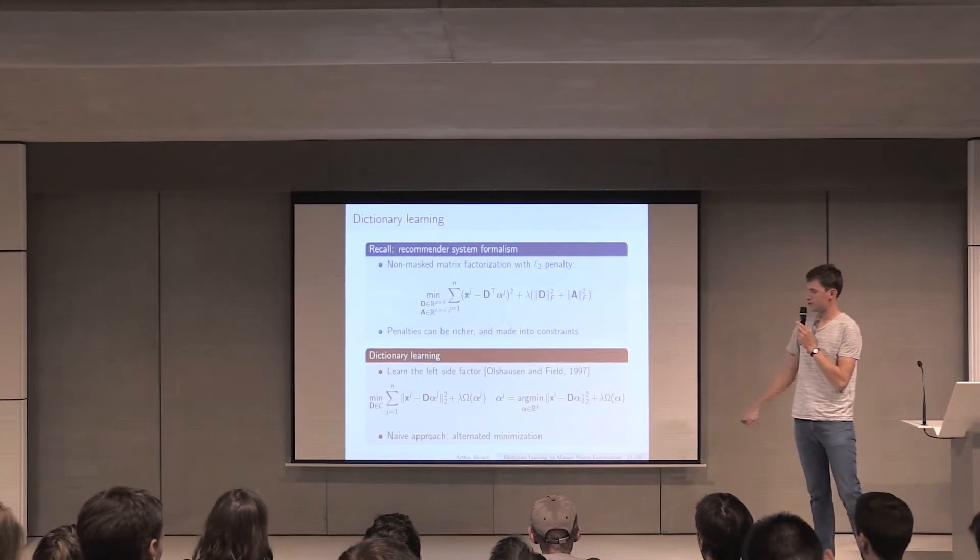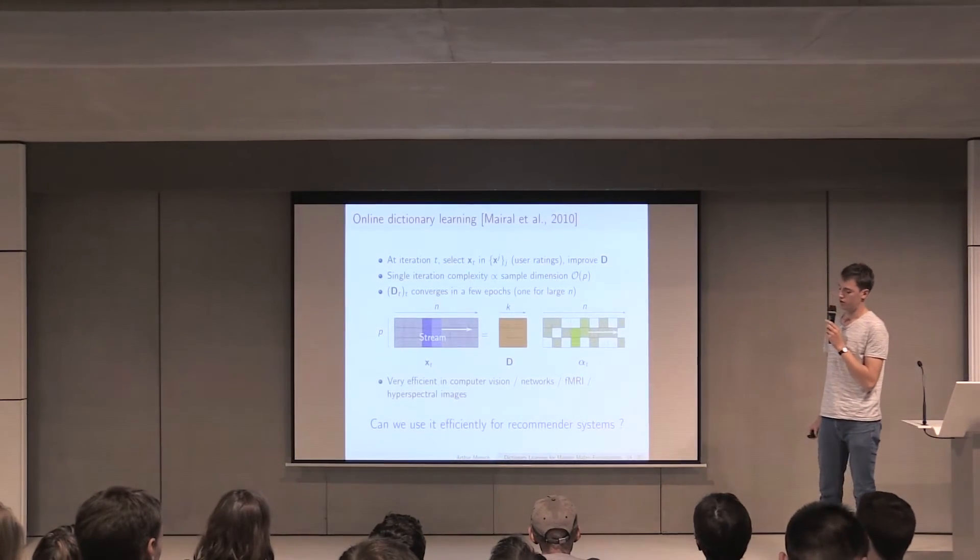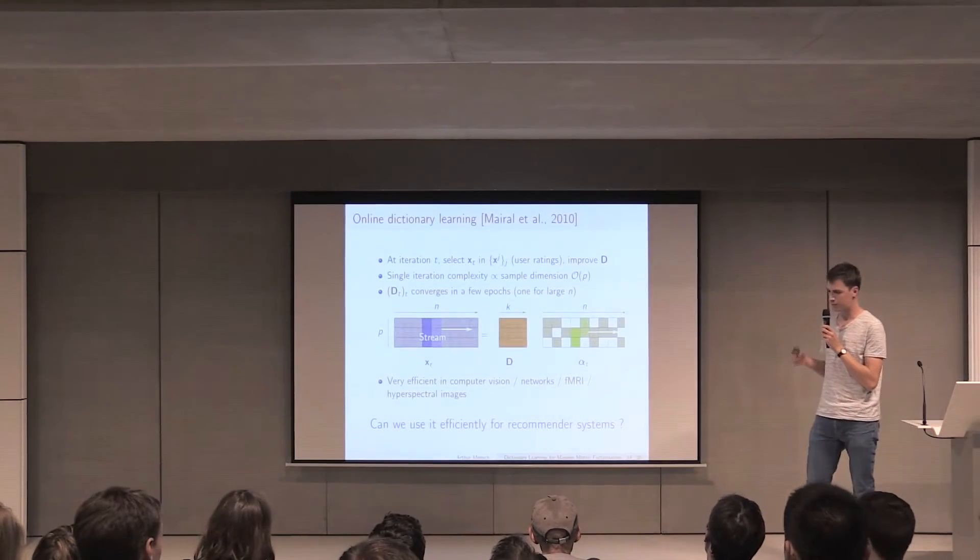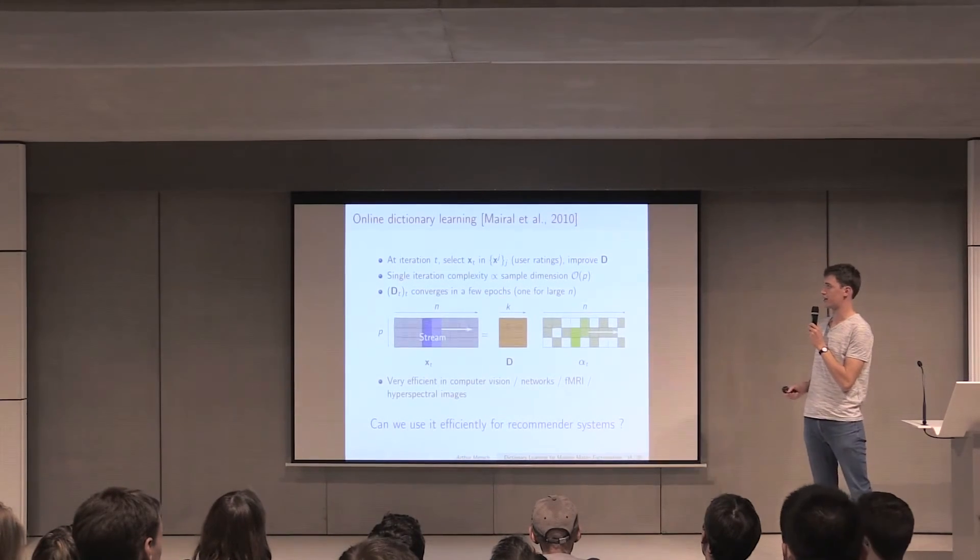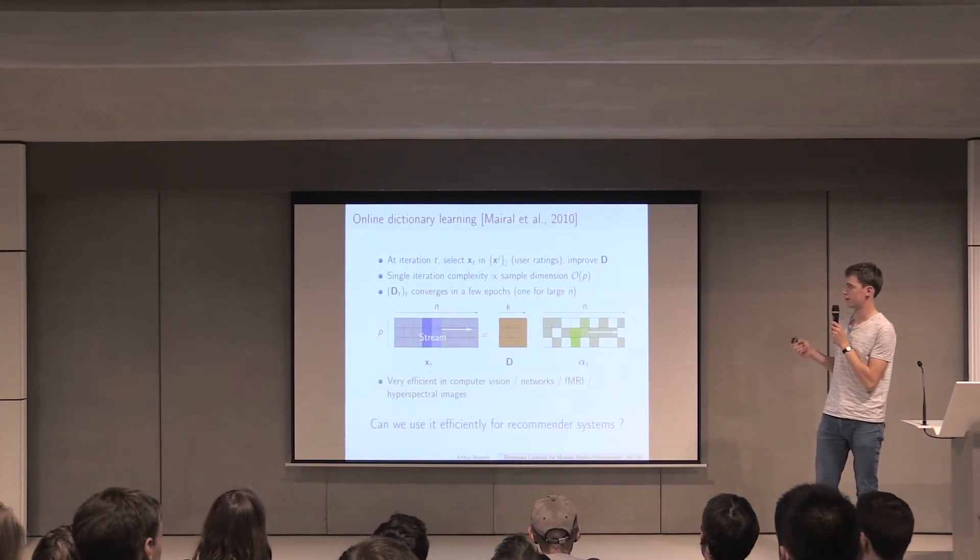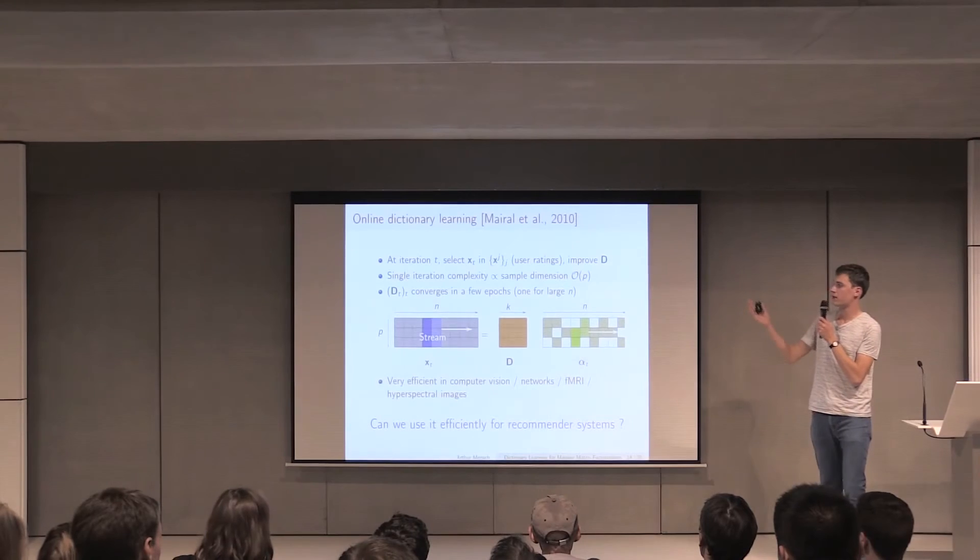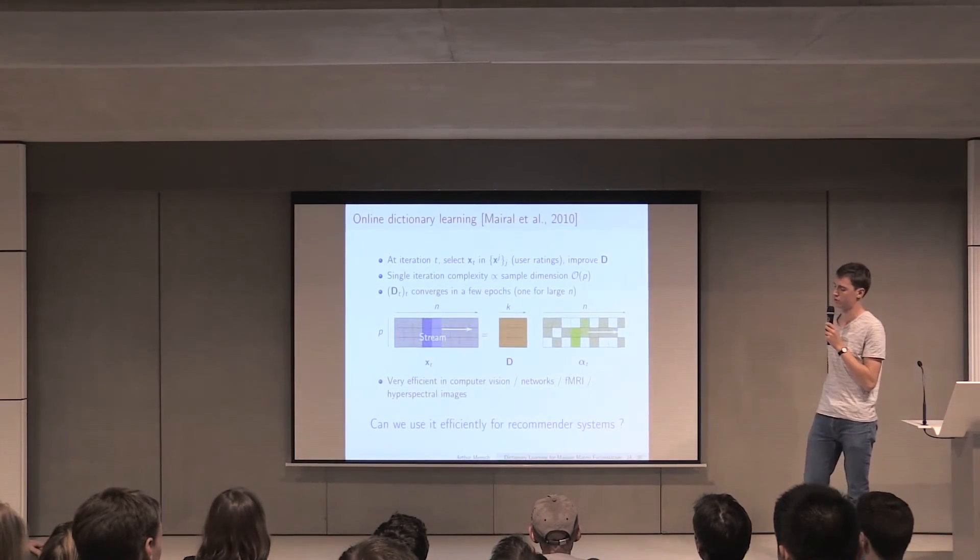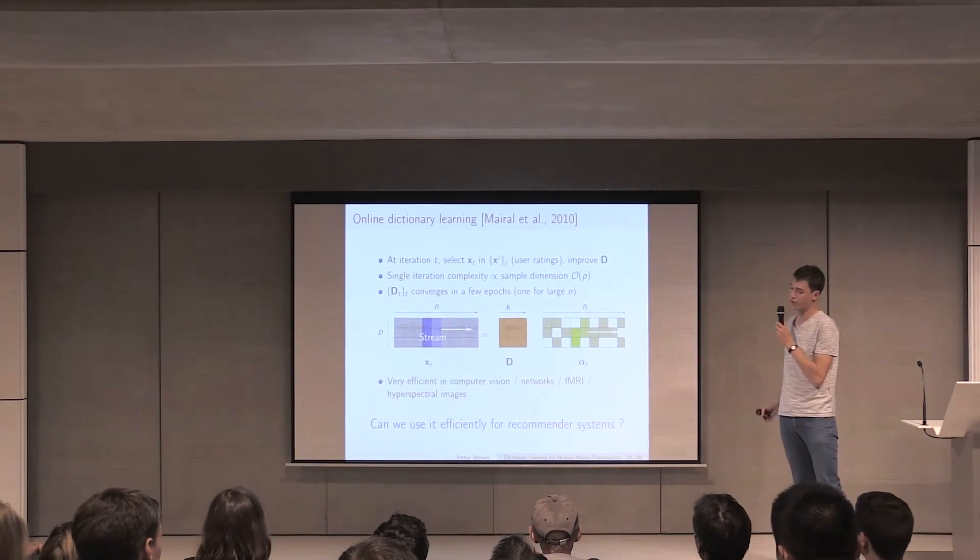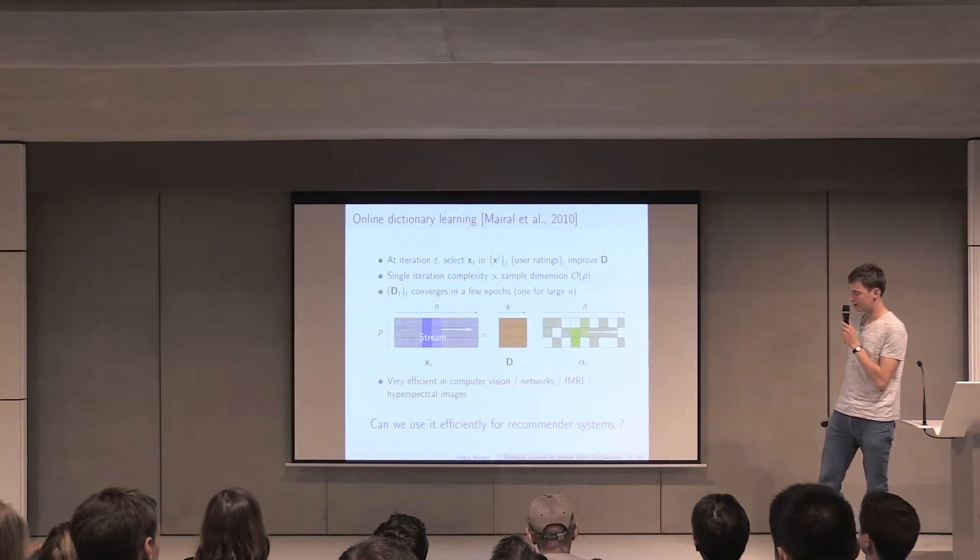In dictionary learning, what you want to do is to find the left side factor, and you consider the right side factor as a latent factor. The naive approach to solve this problem is to do alternating minimization again. It works, but it's slow. But a few years ago, an algorithm was introduced that is online, and that basically performs some update on the dictionary D at each iteration by looking at a single column of the dataset X. This is good because it scales, and what's important is that a single iteration depends on the sample dimension, but not on the number of samples. The idea is that the sequence of iterates will converge in a few epochs, so you only need to look at the dataset twice or three times. If it's large enough, it will even converge before reaching the end of the first epoch. It's a very efficient algorithm in computer vision. It's also used for neuroimaging, fMRI, hyper-spectral images.